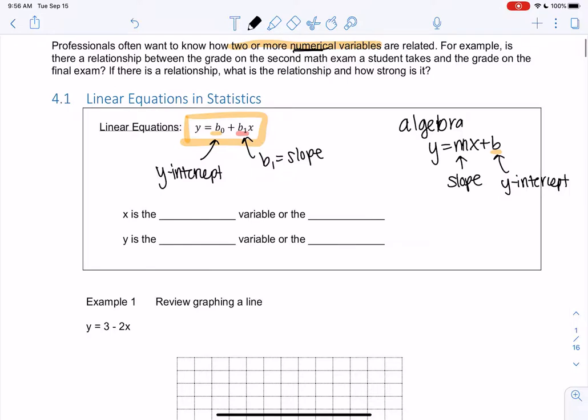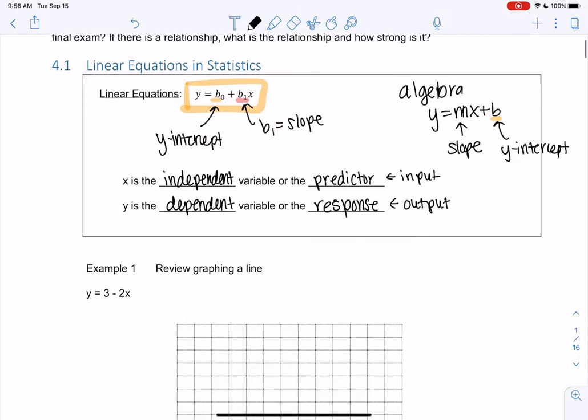We also call x the independent variable. It's kind of like our input, meaning it can be anything. It's independent. Or sometimes we call it the predictor in stats class. So can it make a prediction about y? And then y is dependent on x, so we call it dependent, or we call it the response. Response makes sense with output. It's the response to something. So x is our input or predictor, and then y is our output or response, which relates to the response variable back from chapter 1.